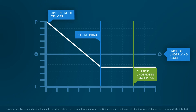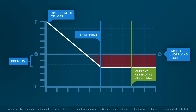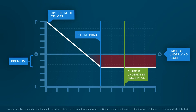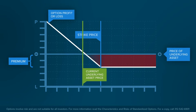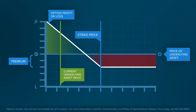The buyer of the option pays a premium to the seller for this right. For a put option, the premium can be shown as a fixed cost beneath the chart. As the market price of the underlying asset decreases beneath the strike price, the cost of the premium is offset by an increase in the option's value and the option becomes increasingly profitable.